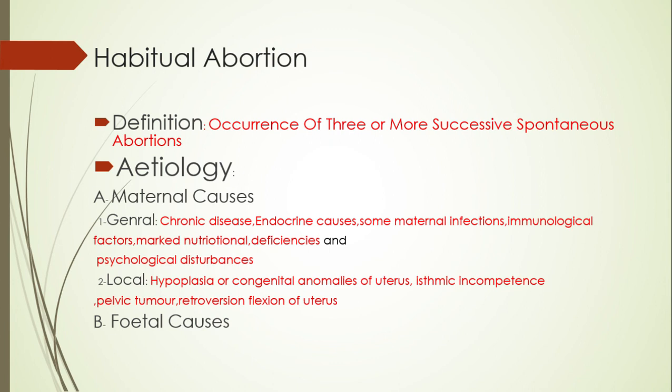In isthmic incompetence, we diagnose the condition by hysterosalpingography, ultrasound, or by passing a number eight Hegar dilator. If the patient is non-pregnant, we can pass a number eight Hegar dilator through the cervix without any resistance.